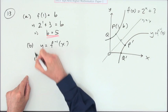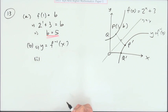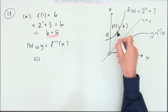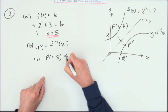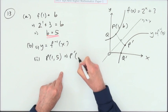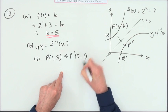It says write down for part 2, write down the images of those two points. Well straight away I know what p is. If p is 1, 5, that means that if I just call it p dash for the image, that will be the opposite way around, 5, 1.